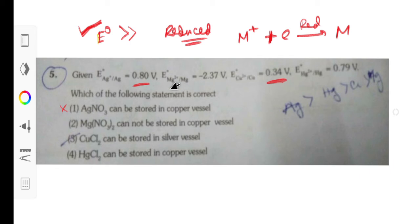We keep it in copper, it cannot be stored. COCl2 can be stored in silver. Copper value is .34, silver is .80. Copper two plus is lower than silver, that can be stored exactly.